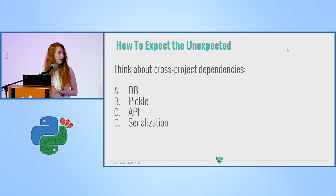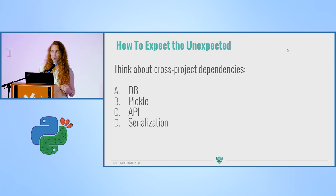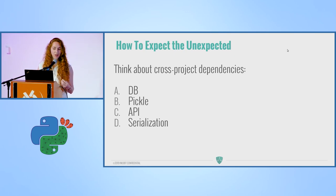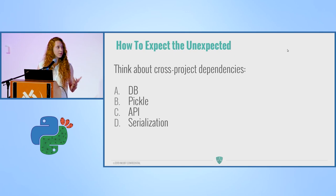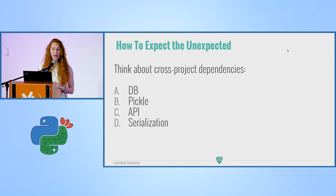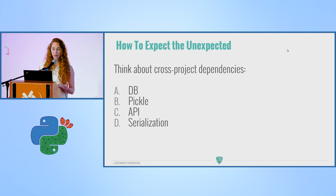We're done with code examples, and I've shared some surprising things that happened to us. To expect the unexpected: during migration, you migrate one project at a time, and the pitfalls might be cross-project dependencies. Any place where you write to the database, use pickle, or do API serializations — those might be pitfalls. Keep them in mind.